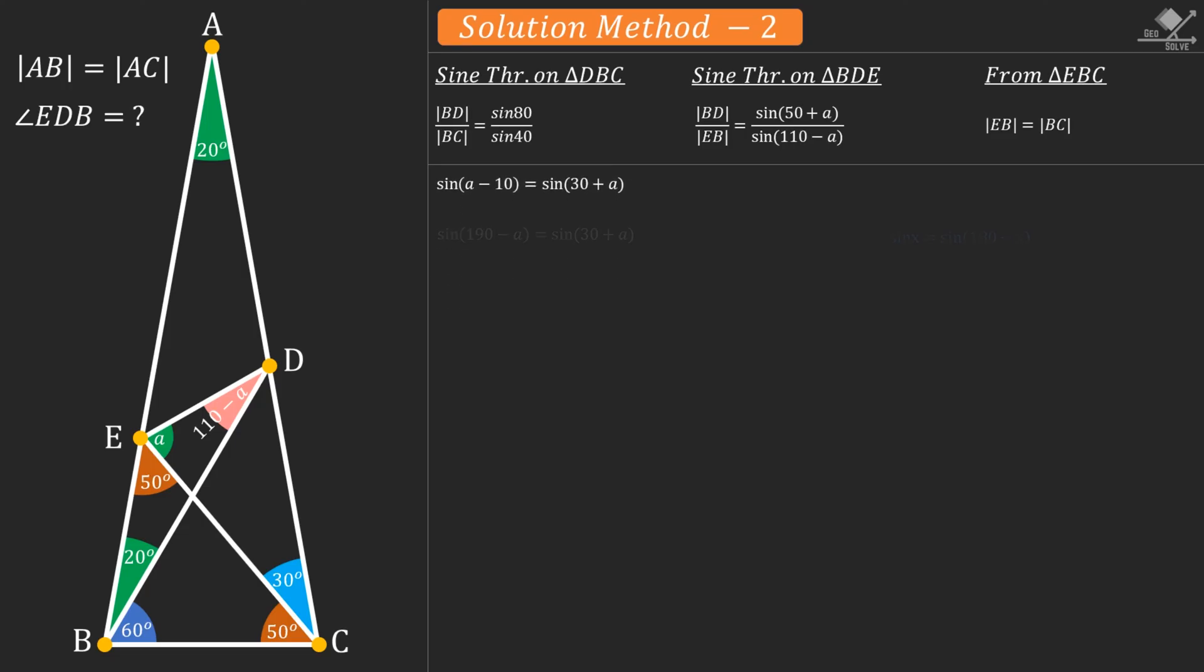Using the property on the right side, we can write as follows. From here, we can say that 190 minus A equals 30 plus A. And so A will be 80 degrees. Since we are looking for 110 minus A, the answer will be 30 degrees.